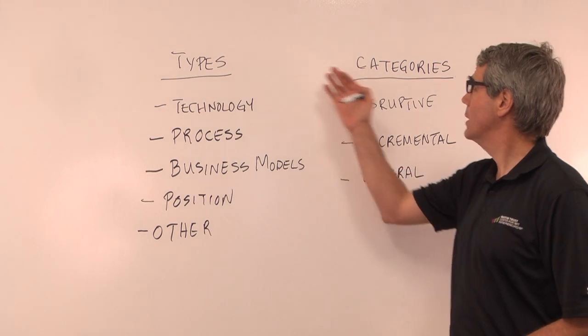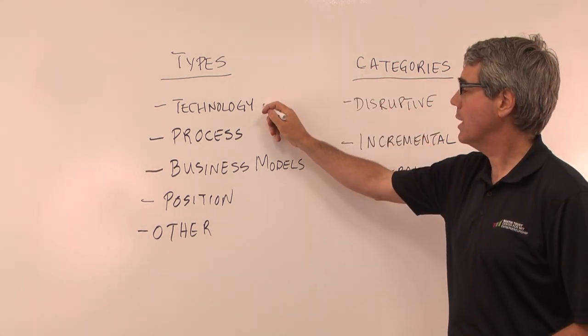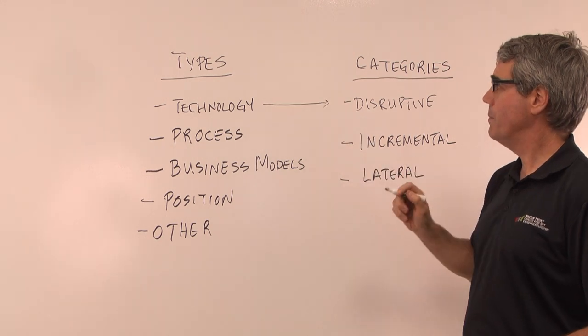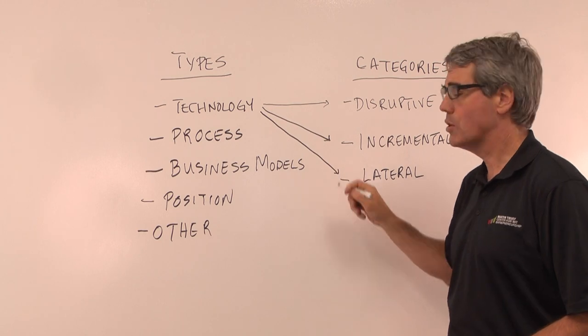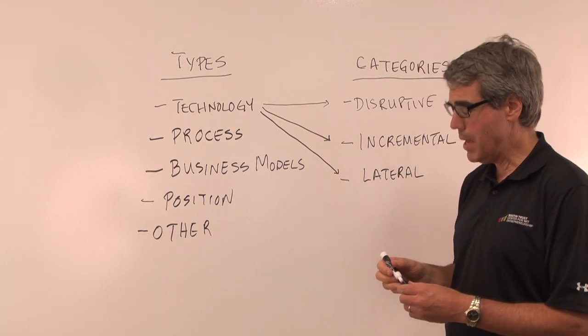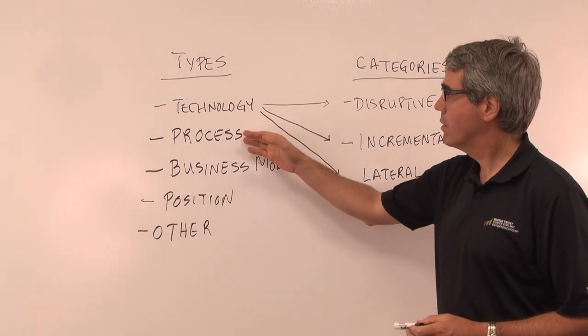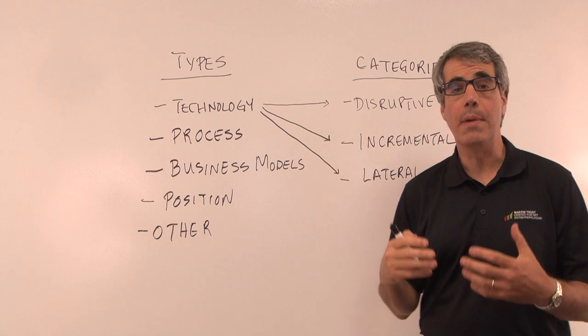Now, why do I have types and categories? Because in this case, you could have a technology that was disruptive innovation. You could have a technology that's incremental or you could have a technology that's already worked in another industry and you bring it in. So really what you have is a matrix where you have three different categories for each type and there could be more.